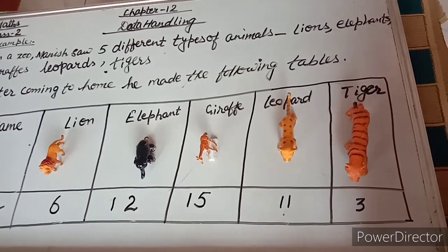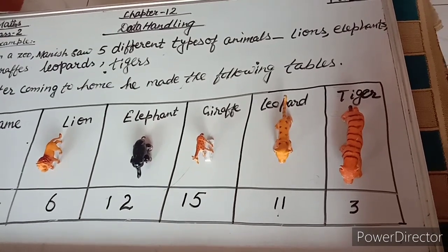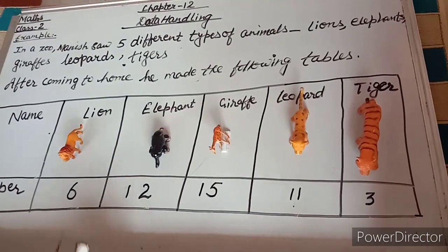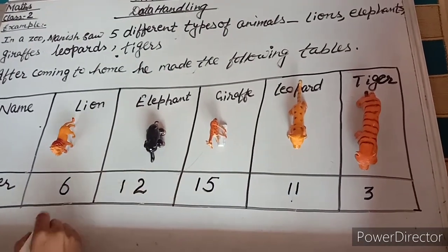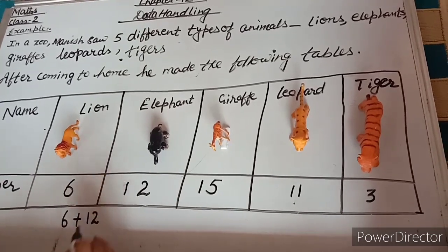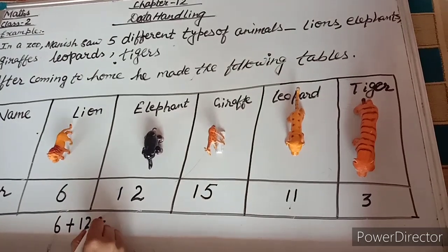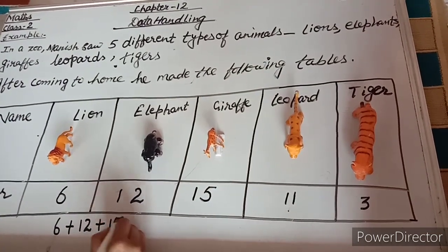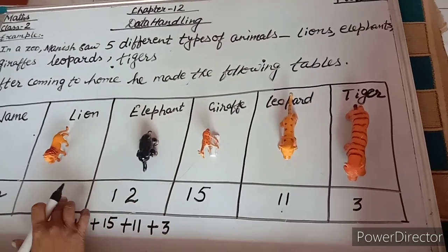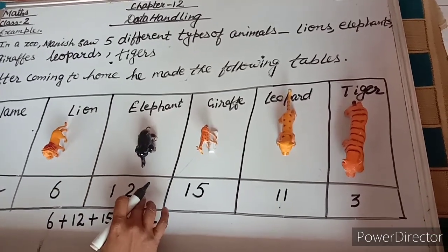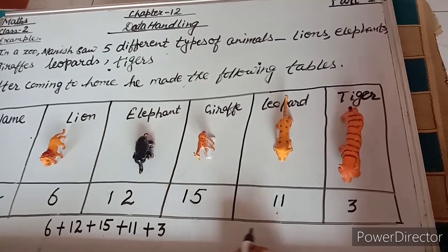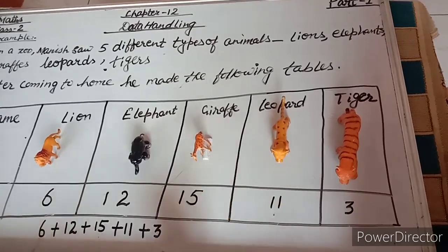How many animals did he see in total? We will add all the animals: 6 plus 12 plus 15 plus 11 plus 3 — that is 6 lions, 12 elephants, 15 giraffes, 11 leopards, and 3 tigers.